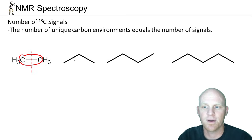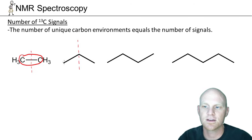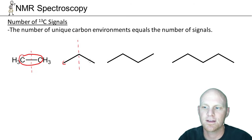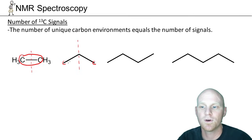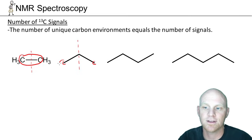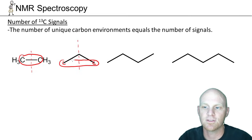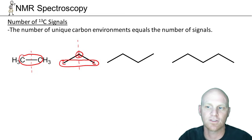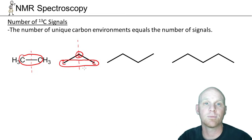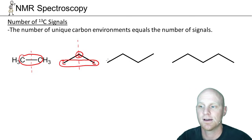If we go to propane, it also has symmetry. This carbon on the left and this carbon on the right are chemically equivalent and would give a single signal. Then the middle carbon gives a second signal. So in propane, we'd expect to find two carbon signals.